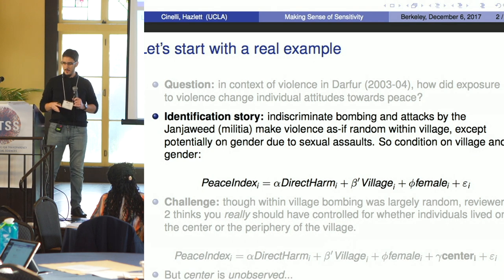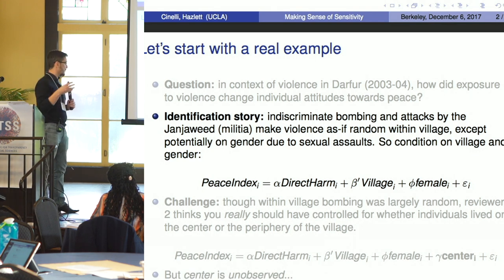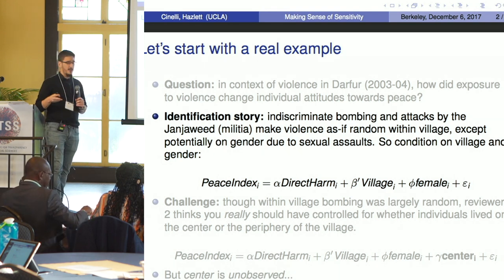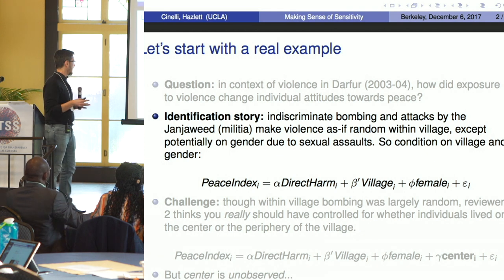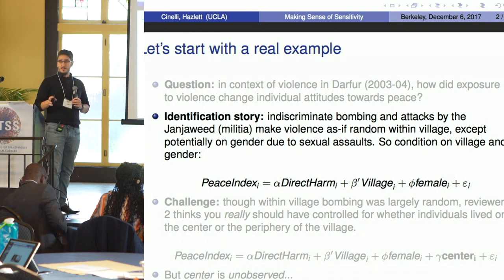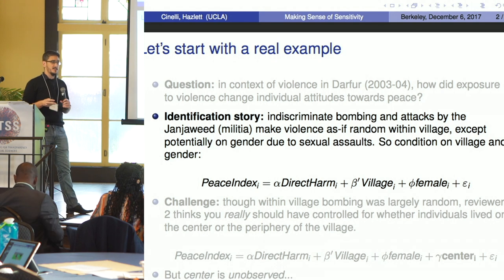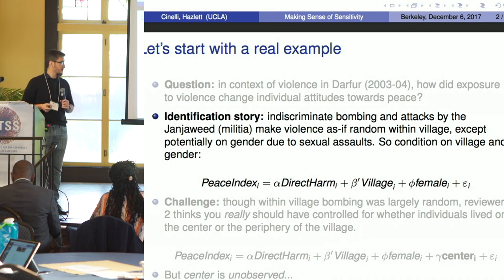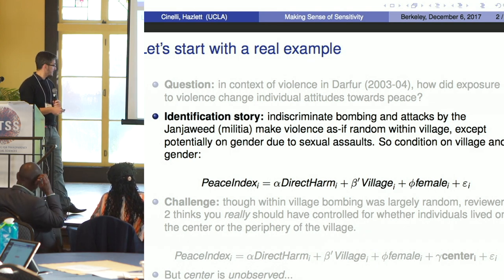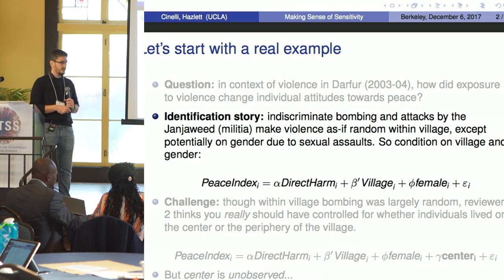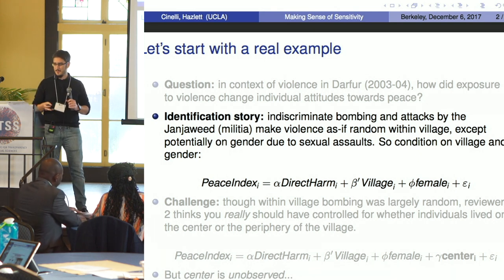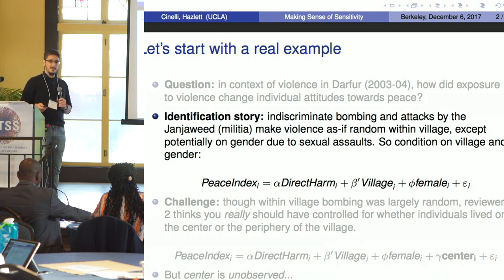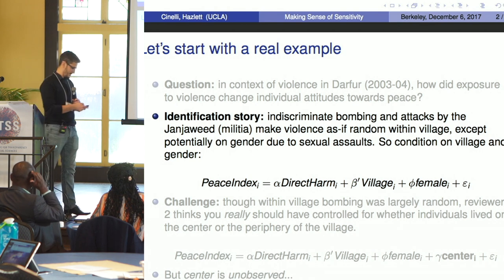The identification story goes as follows: there was indiscriminate bombing and attacks by the Janjaweed militia, so you can consider that the violence within a village was as if random — except potentially on gender, because unfortunately there were many sexual assaults during these attacks. So the identification strategy requires you to condition on village and condition on female, and then you identify the causal effect of being directly harmed on your attitude toward peace.